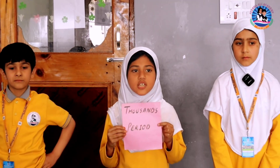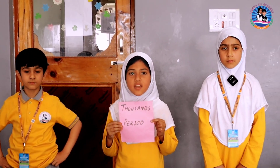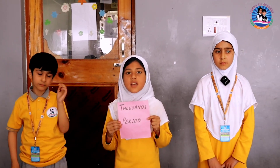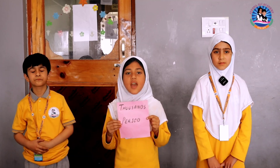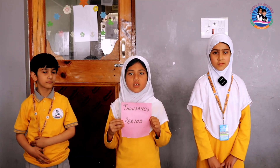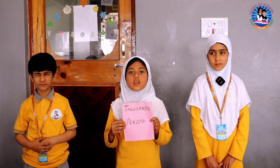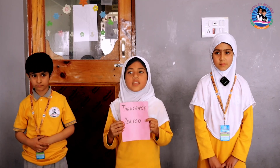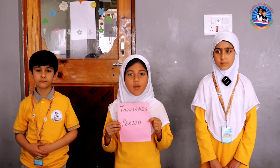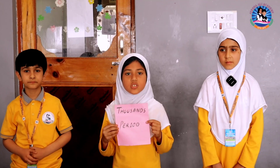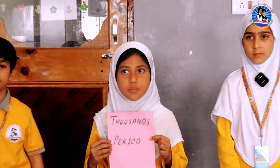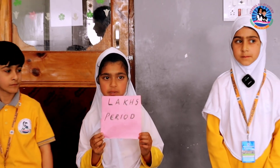In thousand's period, there are two places: thousand and ten thousand. The short form of thousand is TH and the short form of ten thousand is TTH.